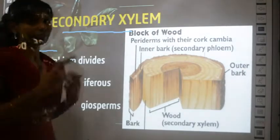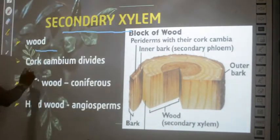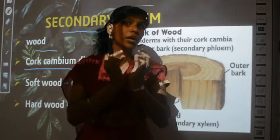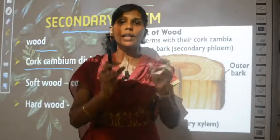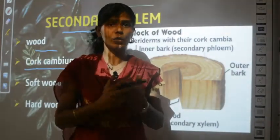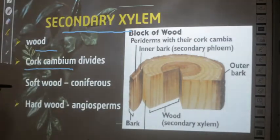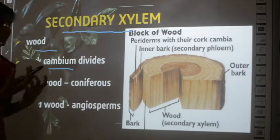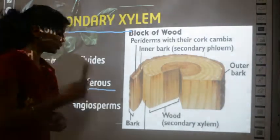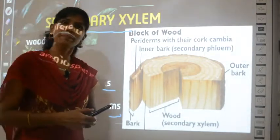From where do you get wood? In some plants there is a part called cork cambium. If the cork cambium divides, it gives rise to secondary xylem — that is called wood. Sometimes the wood is soft in nature, as in the case of coniferous trees. Sometimes the wood is very hard, as in the case of angiosperms — which are flowering plants. This is all about secondary xylem or wood.